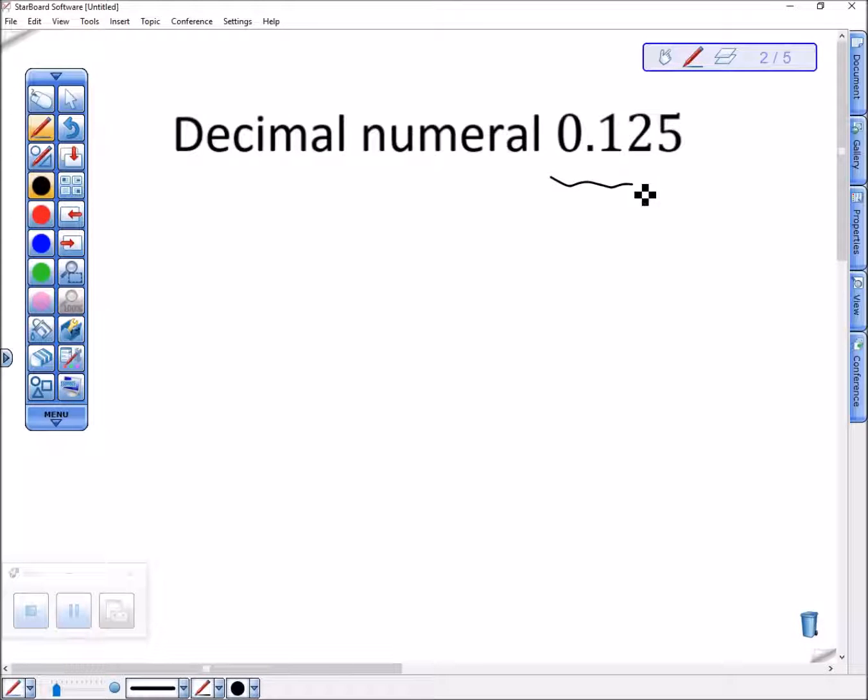For example, here I have 0.125. That's not the right way, that's not going to be the helpful way. Here's the helpful way.